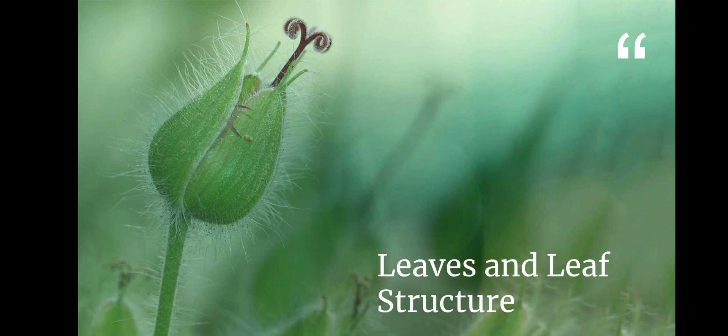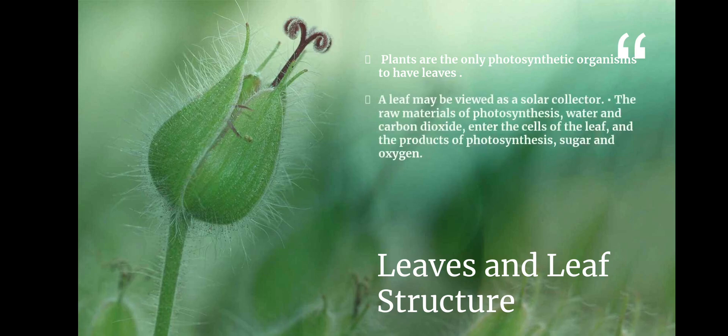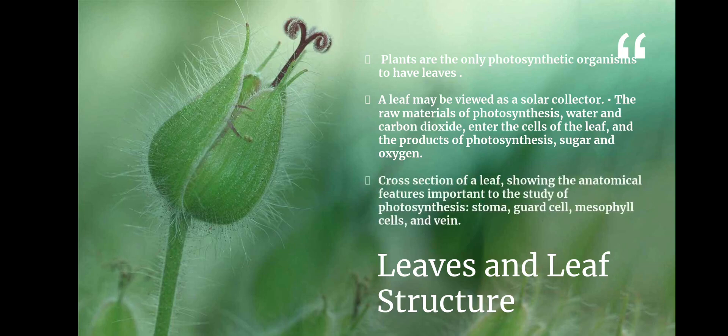Next we see leaves and leaf structure. First point: plants are the only photosynthetic organisms to have leaves. Second point: a leaf may be viewed as a solar collector. The raw materials of photosynthesis — water and carbon dioxide — enter the cells of the leaf, and the products of photosynthesis are sugar and oxygen. Third point: the cross section of a leaf shows the anatomical features important to the study of photosynthesis, such as stomata, guard cells, mesophyll cells, and veins.